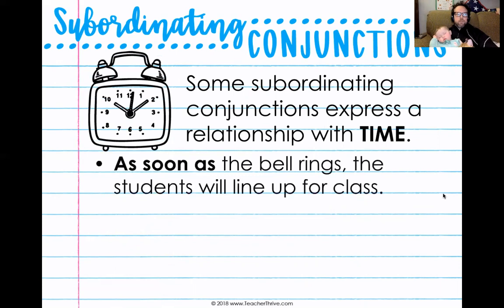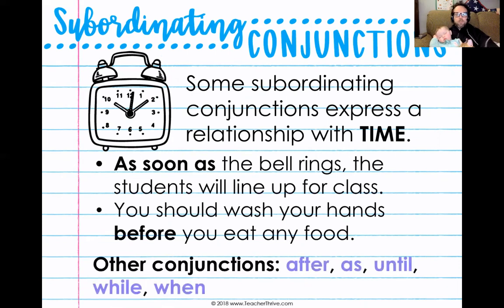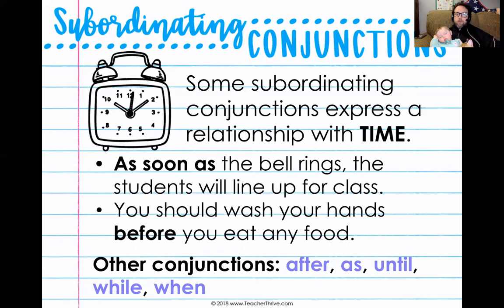We looked at our list and said that subordinating conjunctions can express a relationship with time. So like, as soon as the bell rings, you should wash your hands before you eat food. Words like after, as, until, while, and when are subordinating conjunctions that express time — they tell us when something is happening. The students will line up for class when? As soon as the bell rings. You should wash your hands before you eat any food. That's just common sense and good practice.